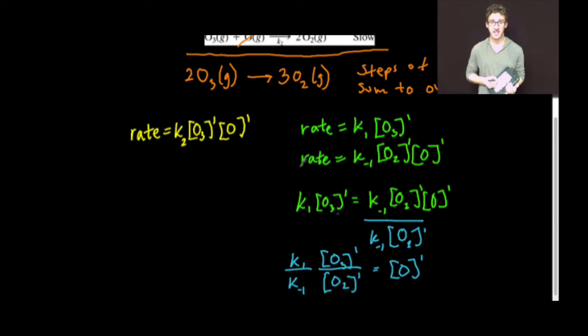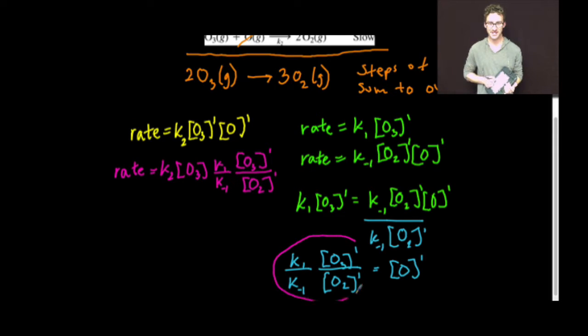Now we can take this and sub it into the original rate law that we wrote for our slow step. Notice I just subbed this in for my value of the concentration of O.